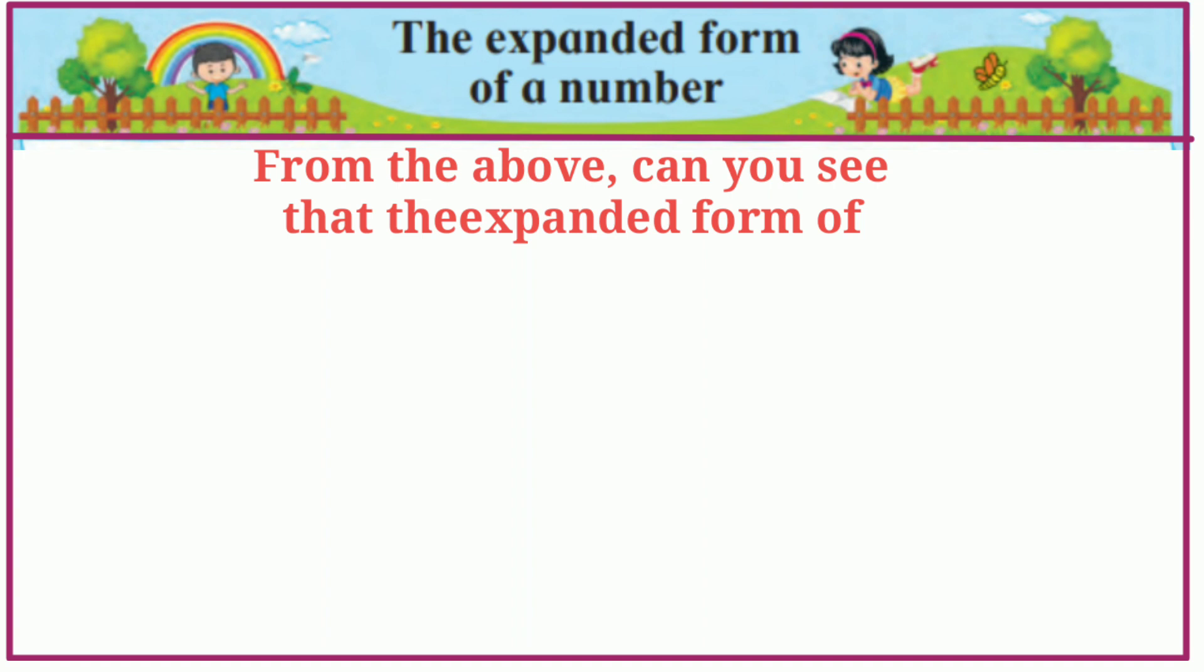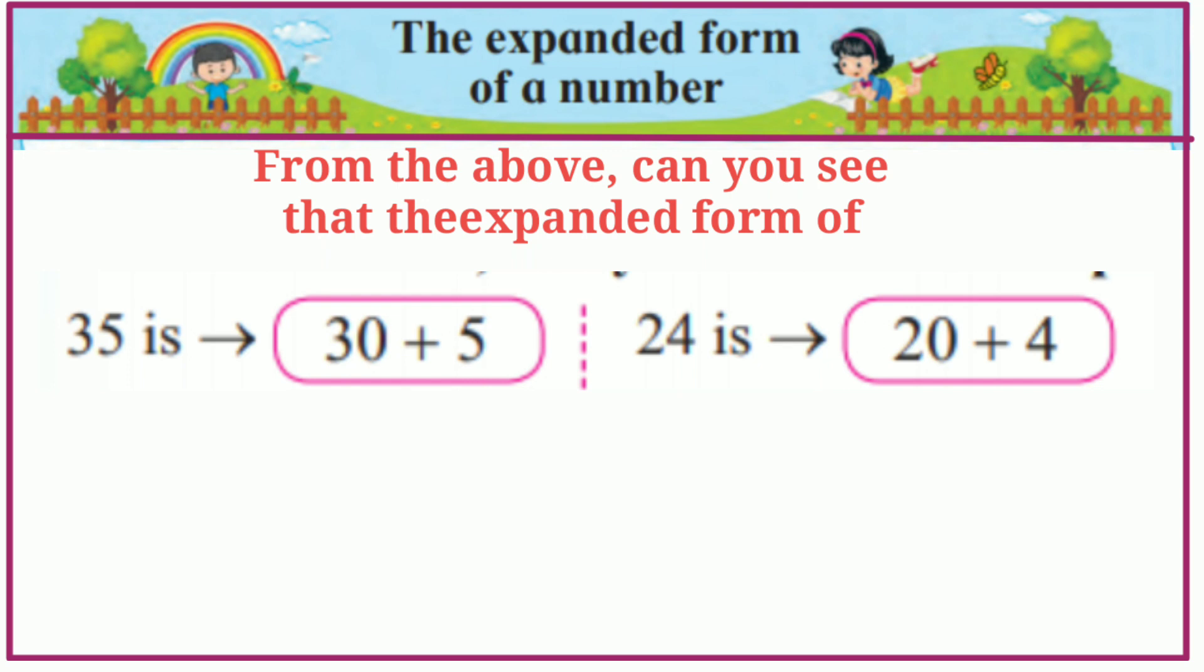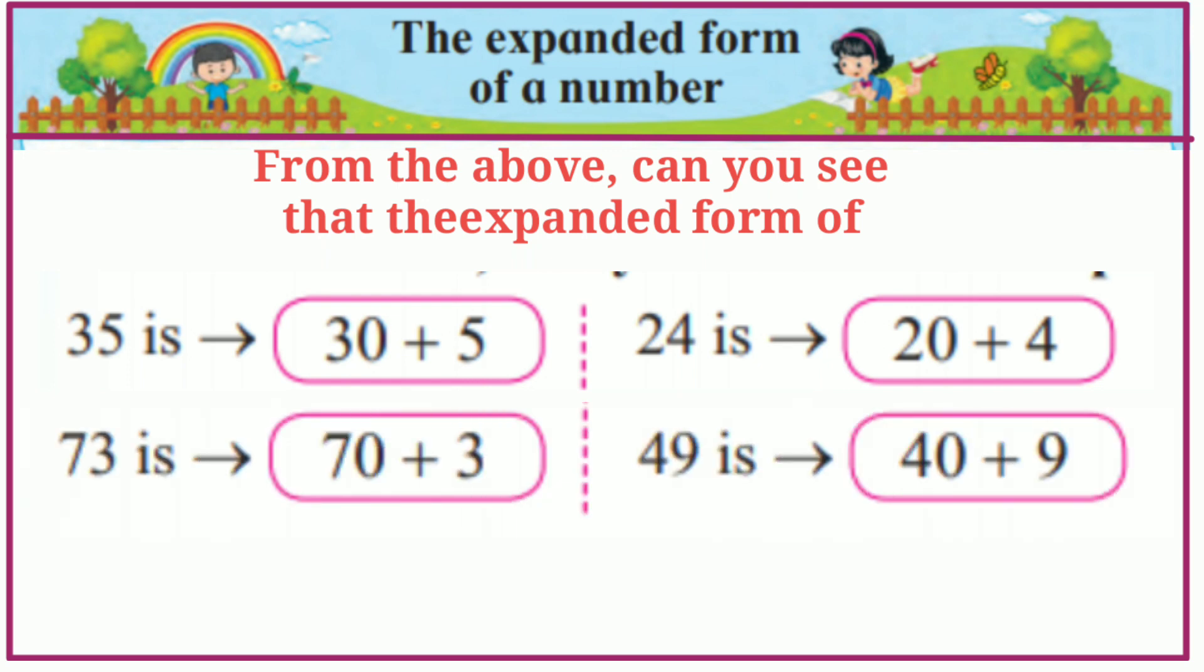From the above can you see that the expanded form of 35 is 30 plus 5. 24 is 20 plus 4. 73 is 70 plus 3. 49 is 40 plus 9.